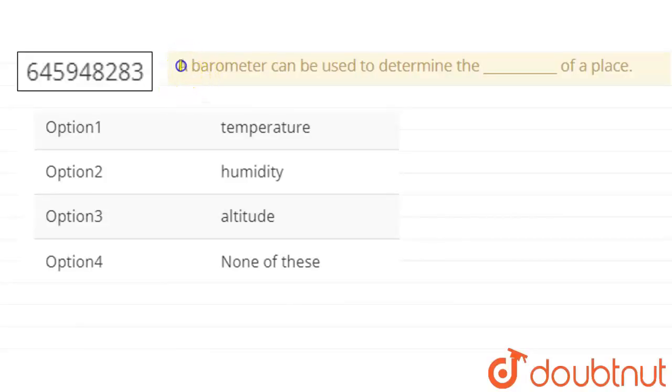Hi, so my question asks that a barometer can be used to determine blank of a place. Options given are temperature, humidity, altitude or none of these. Basically, what is a barometer?